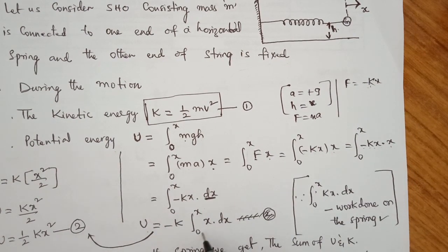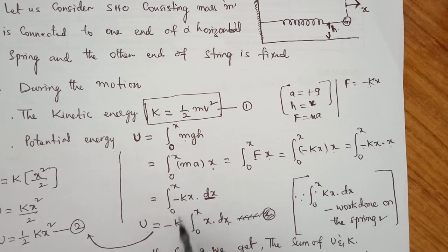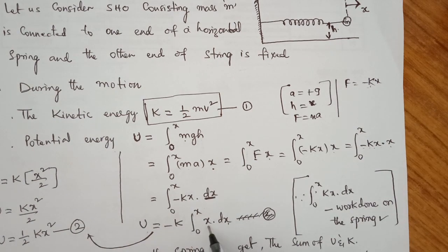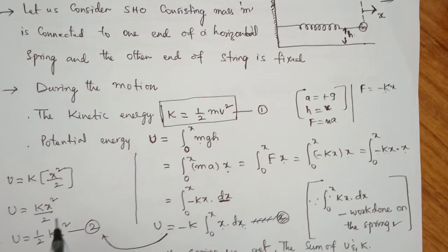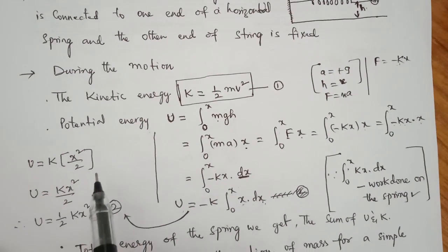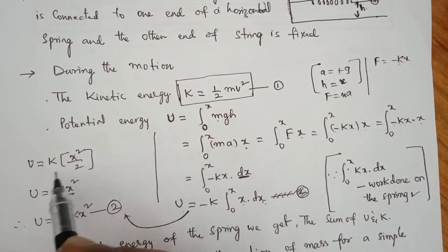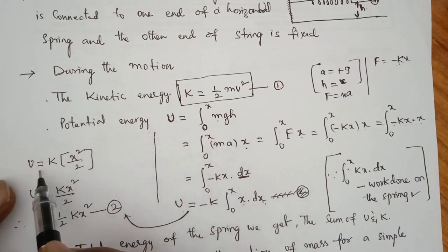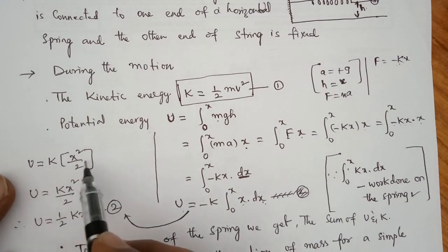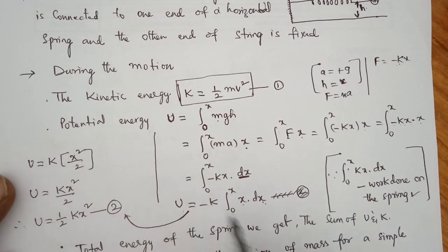We can write the integration from zero to x of dx, which gives minus k times the integration from zero to x of x dx. After doing the integration, U is equal to k into x squared by 2.